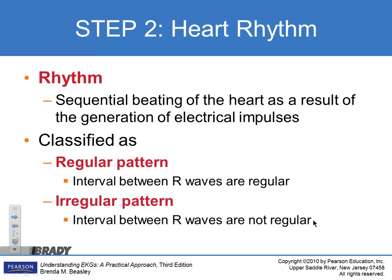Now, rhythm — we're looking at whether the heart is beating in a normal rhythmic sequence. A regular pattern means the interval between R-waves is consistent; we see this in sinus rhythms, sinus bradycardia, and sinus tachycardia. An irregular pattern means there's no normal impulse interval between the two. We measure regularity using calipers placed on the QRS or P-waves to check if the distances are equal.